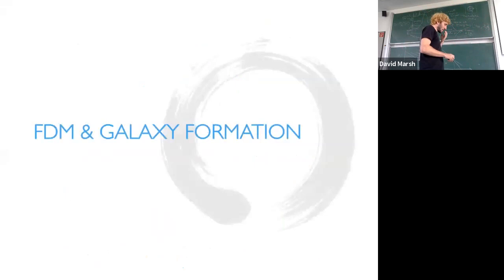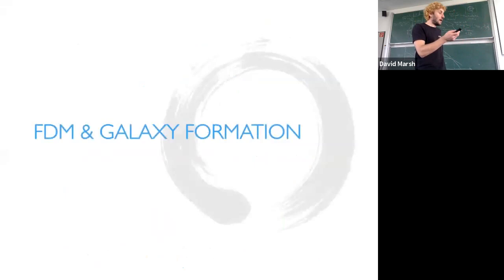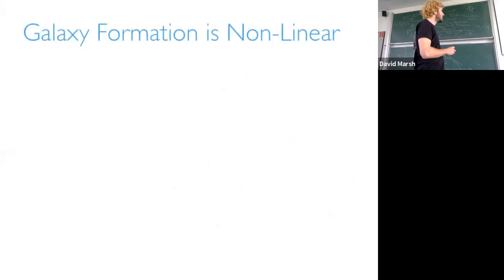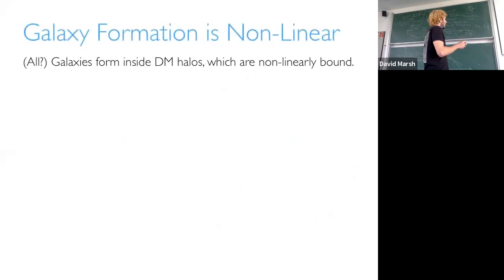Nonlinear scales, fuzzy dark matter, and galaxy formation — I'll recap a little bit of what Daniel told us this morning, in less detail. Galaxy formation is non-linear, so we can probe non-linear scales to improve bounds on axions, but non-linear physics is hard. Galaxies form inside dark matter halos, which are non-linearly bound — though some galaxies like globular clusters may not have dark matter halos. Most galaxies form inside dark matter halos, but not necessarily all of them. This was actually an early motivation for the fuzzy dark matter model: in cold dark matter you have halos all the way down, but a cutoff in the halo mass function might explain things like clusters that don't live in dark matter halos.